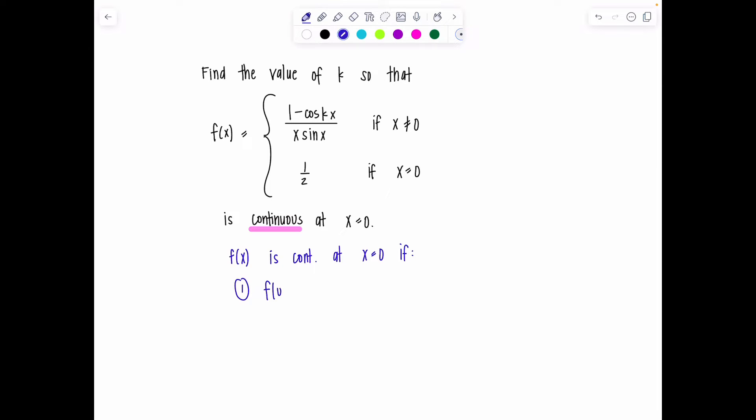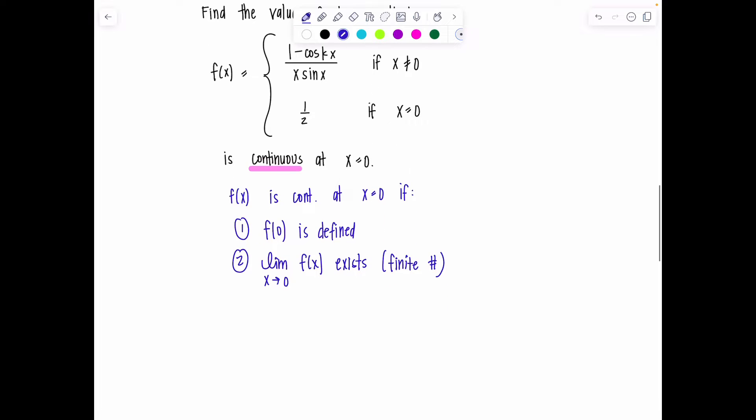One, f(0) is defined, it exists. Two, the limit as x approaches 0 of f(x) exists and it needs to be a finite number. And three, the third condition basically encapsulates the first two, that step one equals step two. So the function value at 0 equals the limit as x approaches 0 of f(x).